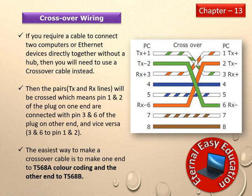Next is Crossover wiring. If you need to connect two computers or Ethernet devices directly together without a hub, you use a crossover cable. In crossover wiring, the TX and RX paths are crossed — pin 1 and 2 on one end connect to pins 3 and 6 on the other end, and vice versa. The easiest way to make a crossover cable is to wire one end as T568A color coding and the other end as T568B.